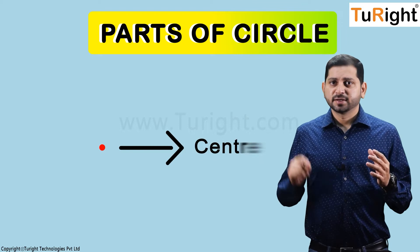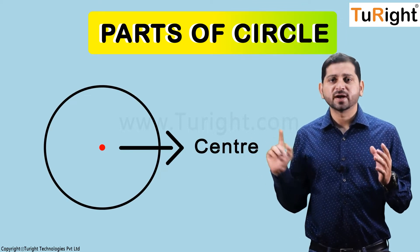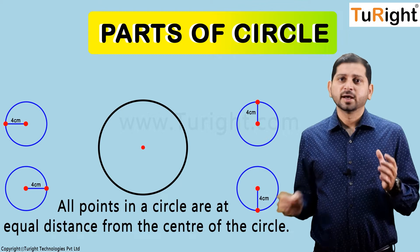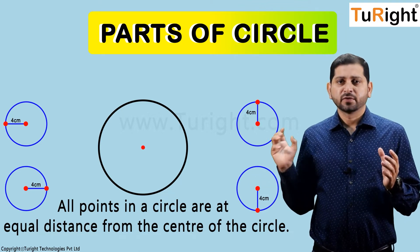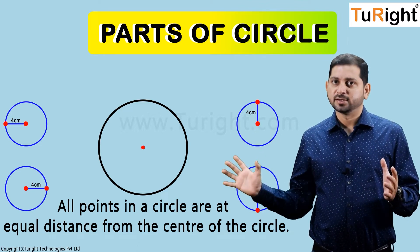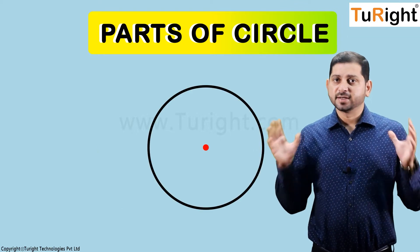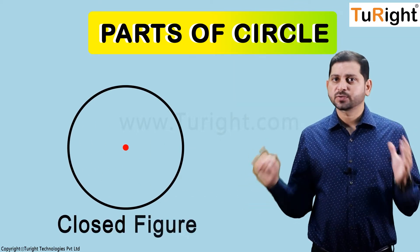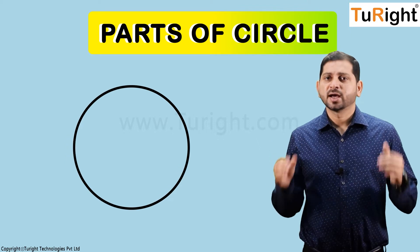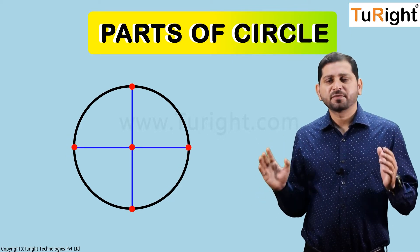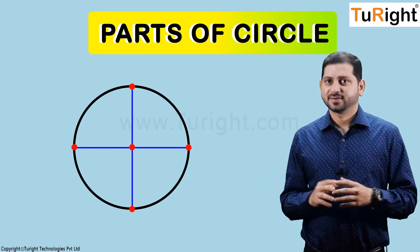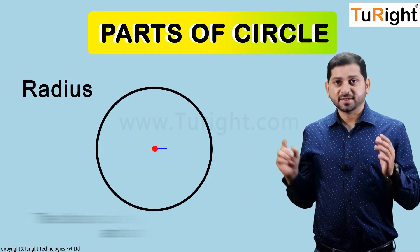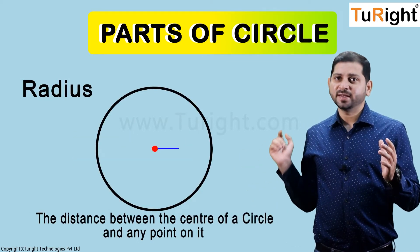First, there is the center of a circle. All points in a circle are at equal distance from the center. In fact, a circle is defined as a closed figure where each of its points are at equal distance from a fixed point within it.